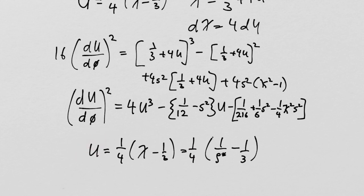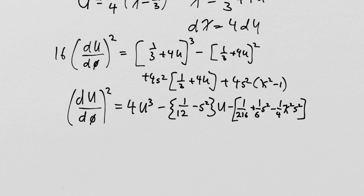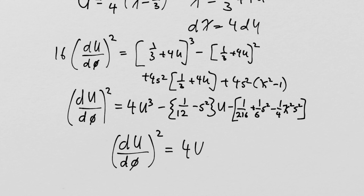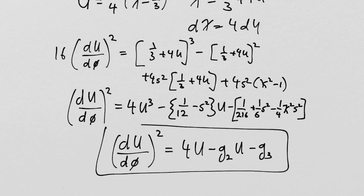You might ask what the benefit of this substitution is. The answer comes from knowing the special functions of mathematics. I know that this differential equation — (dU/dφ)² = 4U³ - g₂U - g₃ — has a known solution. To find it, we turn to the famous reference Abramowitz and Stegun, available online and maintained at the National Institute of Standards. Chapter 18 is titled Weierstrass Elliptic and Related Functions.